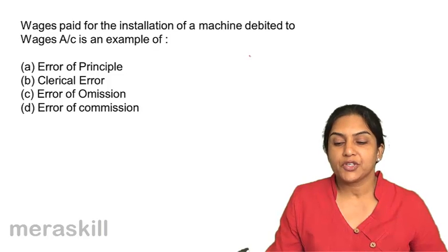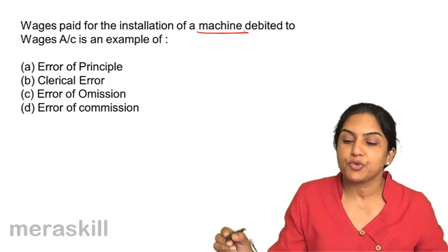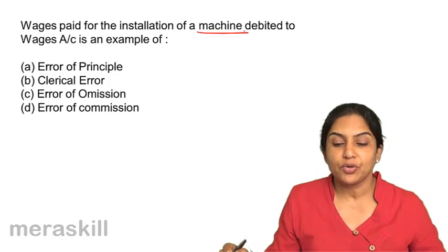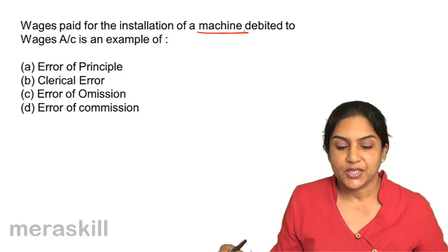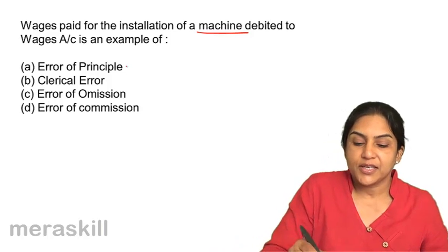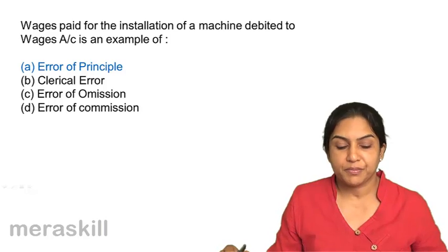Wages paid for the installation of a machine are supposed to be debited to the machine account, not the wages account. This is an error of principle. Correct answer: A.